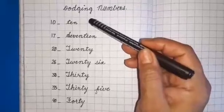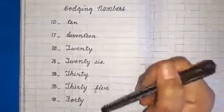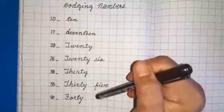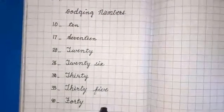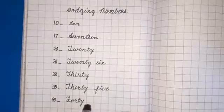Here your dodging numbers are completed. So in this way we have to revise the number names.